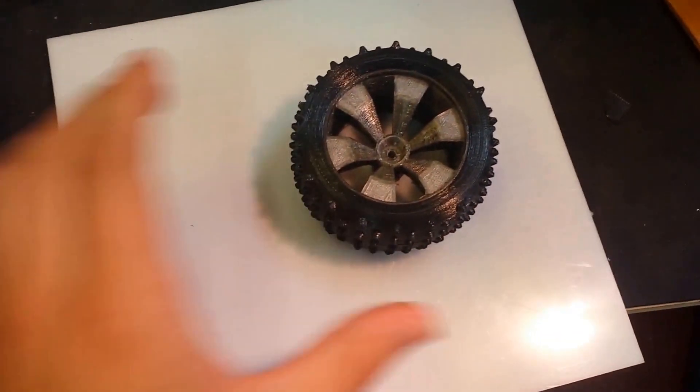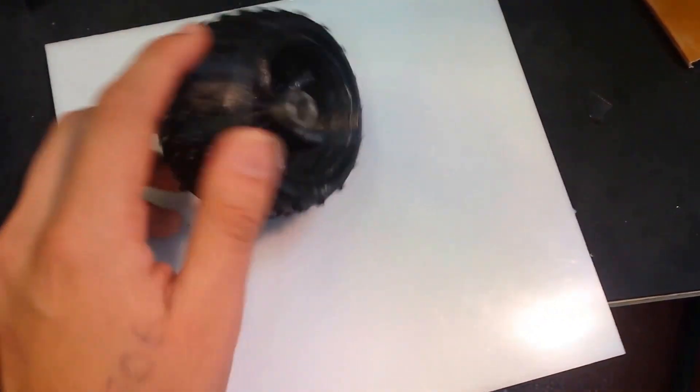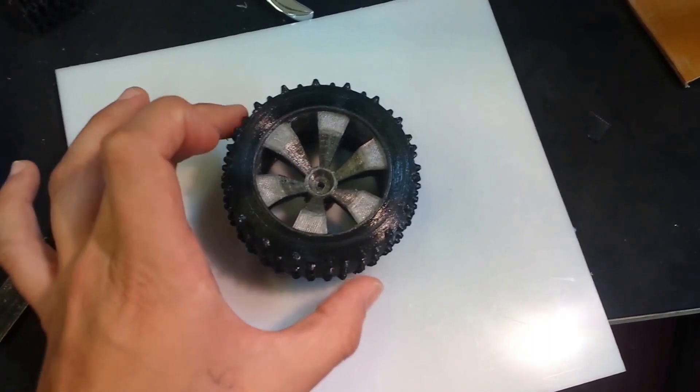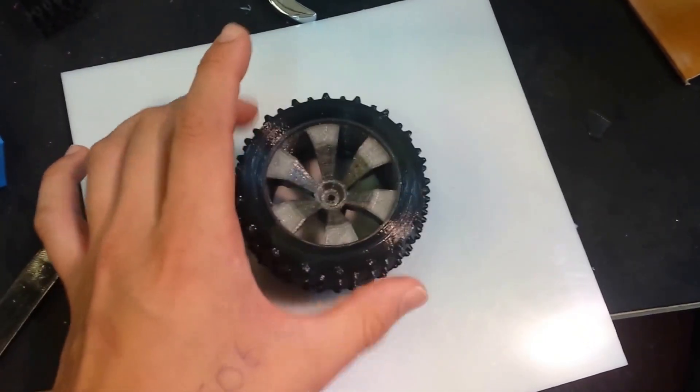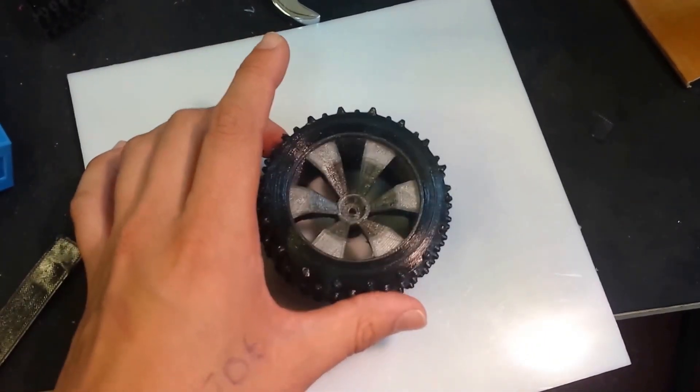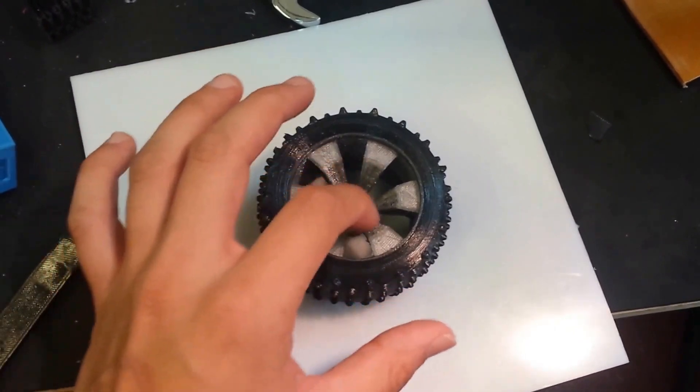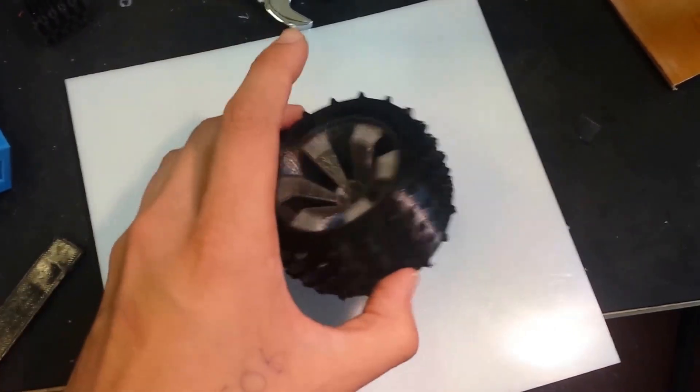So the first one is printed with Cyclops. It's an OpenRC Truggy tire. And what we've done is actually printed the tire in semi-flexible material around a rigid PET hub all in one print. So that's quite nice.